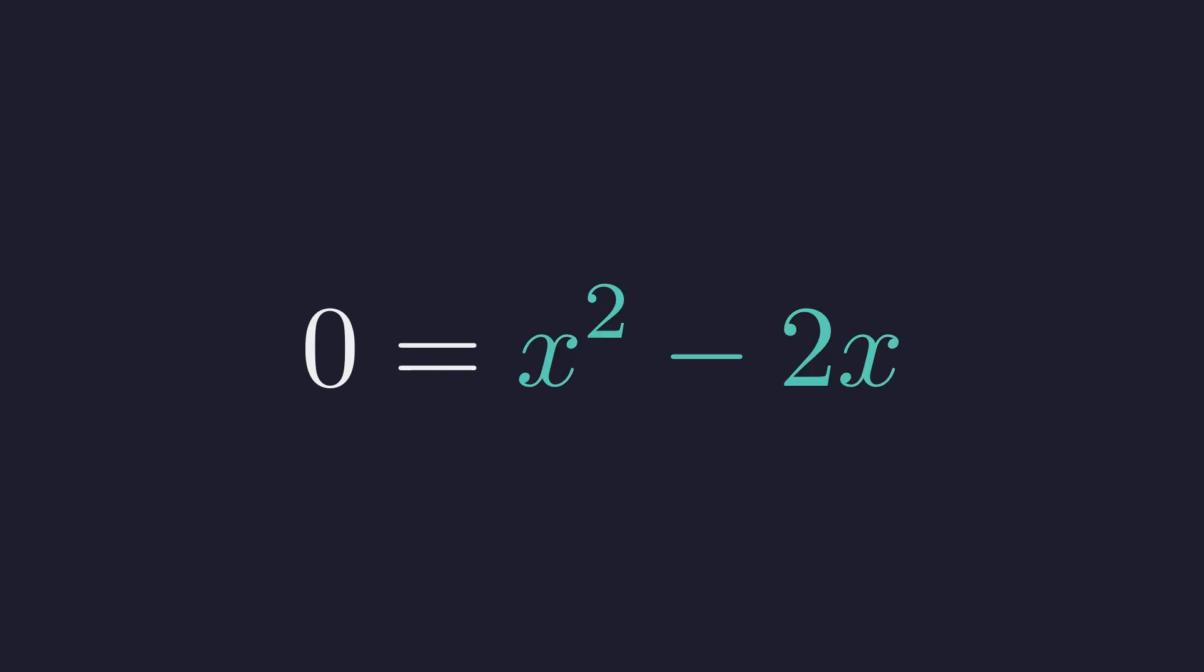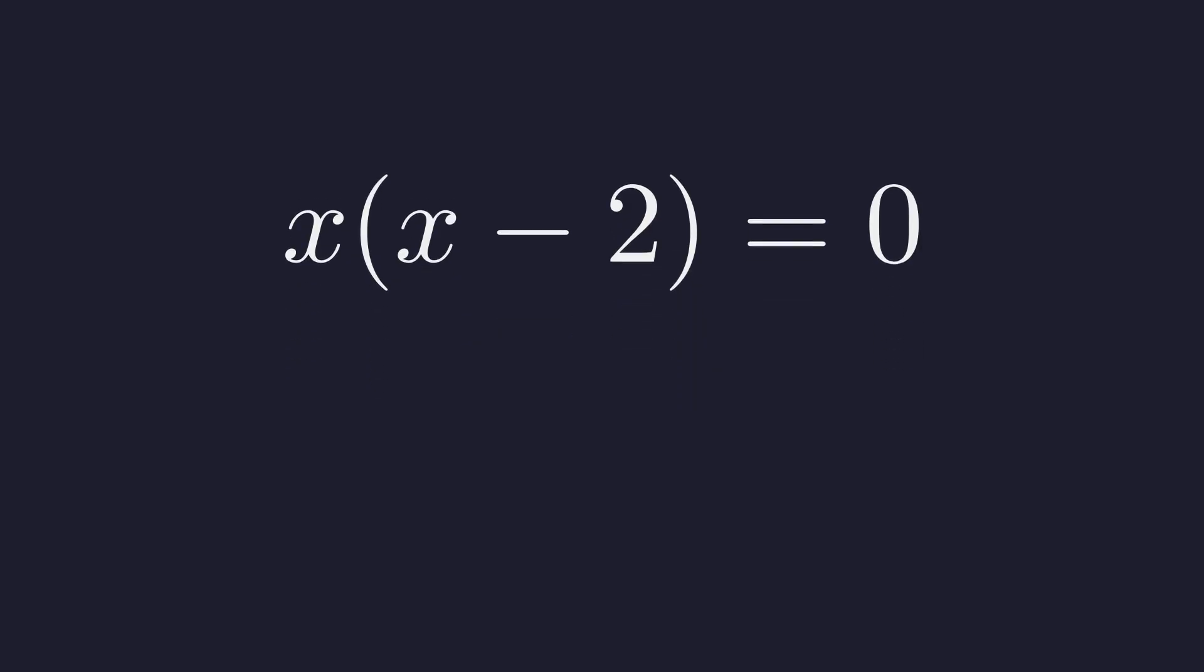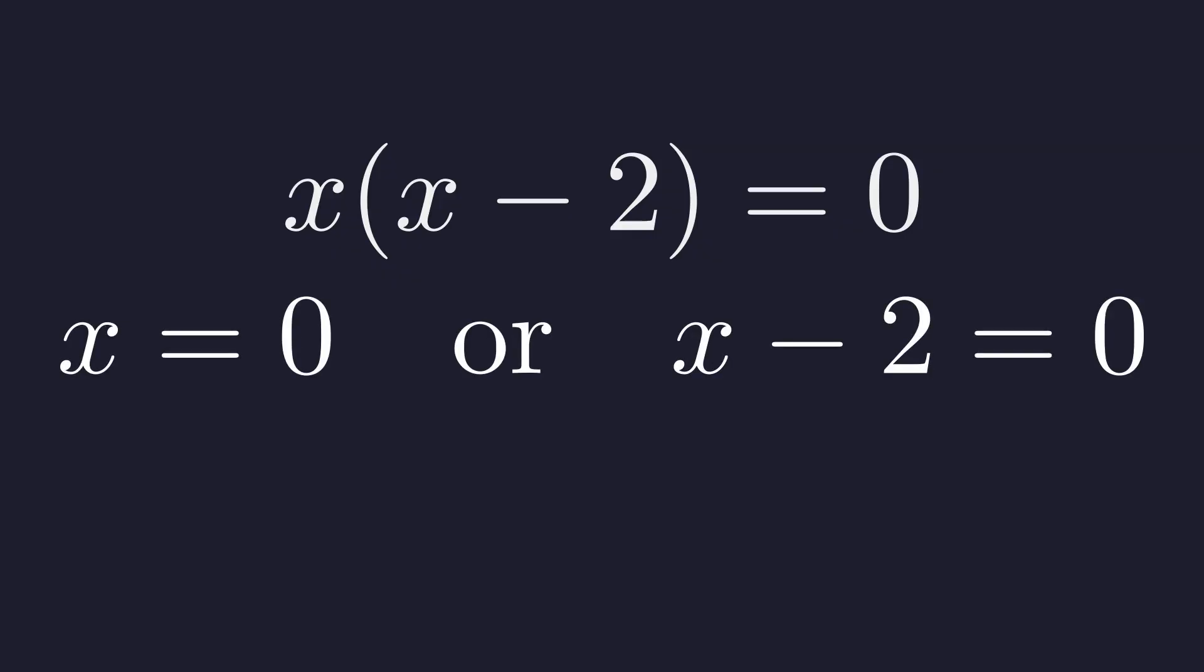We can solve this by factoring. Pull out the common x. In factored form, for the product to be 0, one of the factors must be 0. This gives two candidates, x equals 0 or x equals 2. Both satisfy our initial constraint that x must be non-negative.